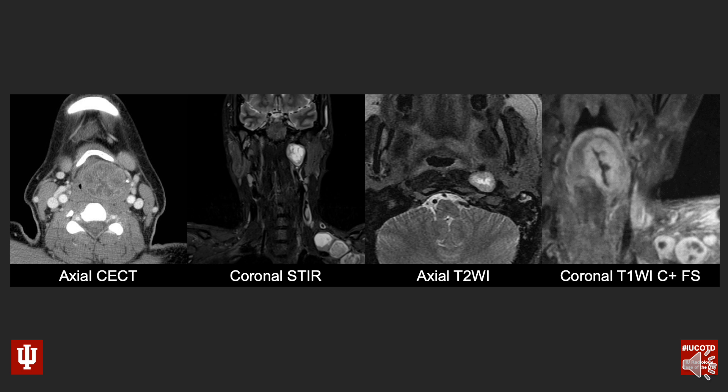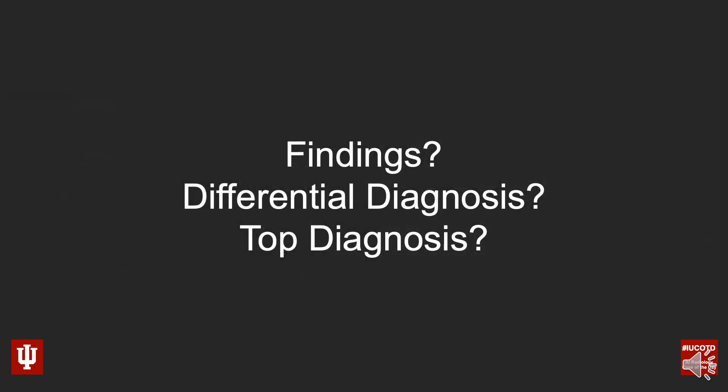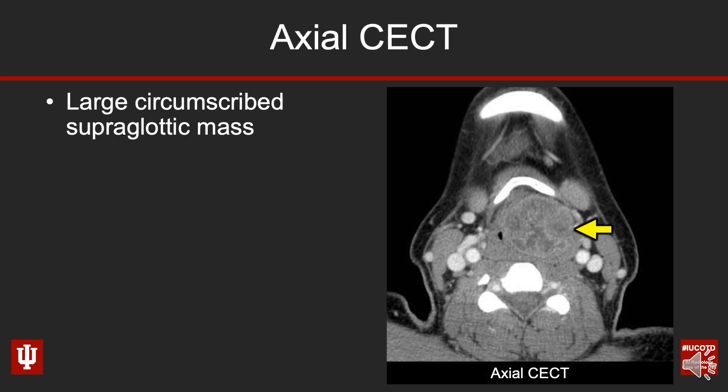Take a look at these images and try to piece together what you think might be happening here. What are the findings? What's your differential diagnosis when you see this kind of pattern, and what's your top diagnosis based upon the clinical information and the imaging findings?